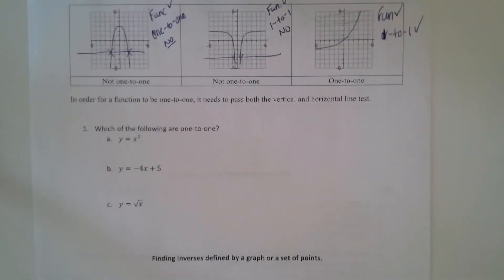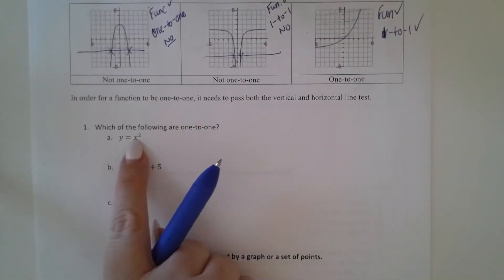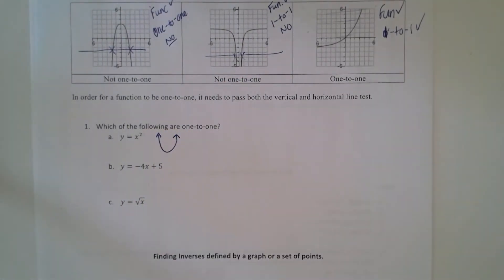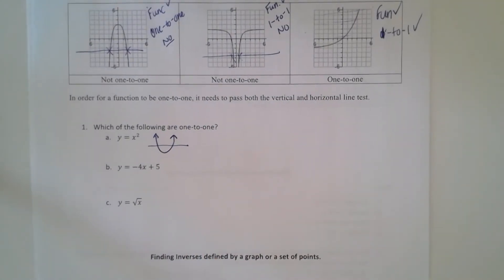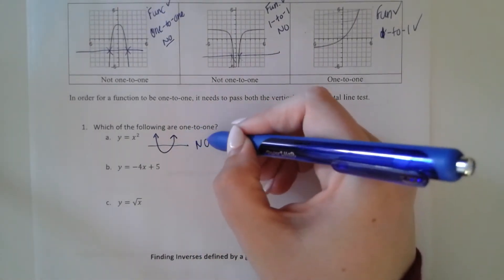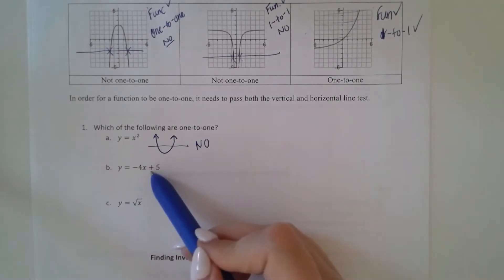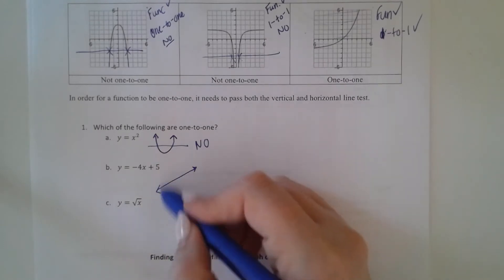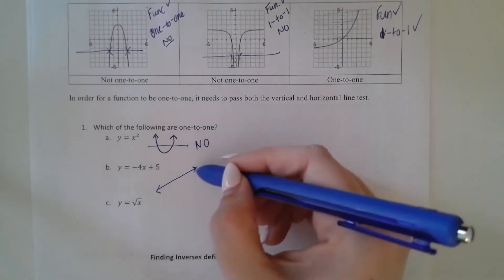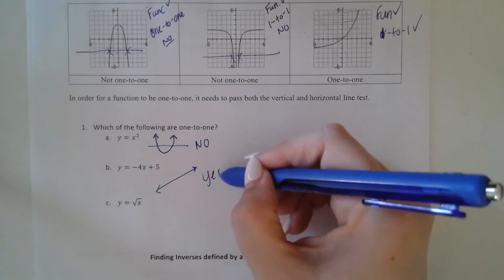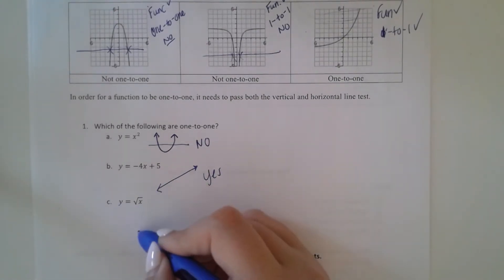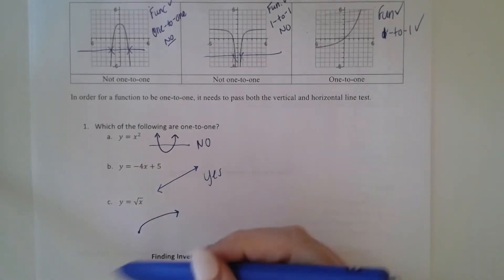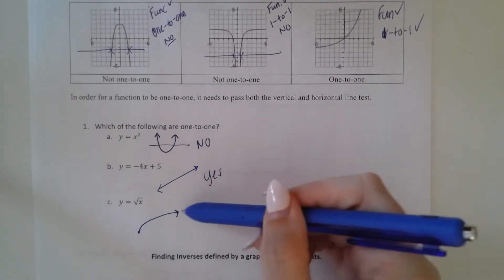So are the following one-to-one? Well, x squared — that's a polynomial, that's a parabola — so that would not pass the horizontal line test, so no. Negative 4x plus 5 — well, that's just a linear equation. Would that pass the vertical? Yes. Would that pass the horizontal? Yes. So yes. The square root function — pass the vertical? Yes. Does it pass the horizontal? Yes.